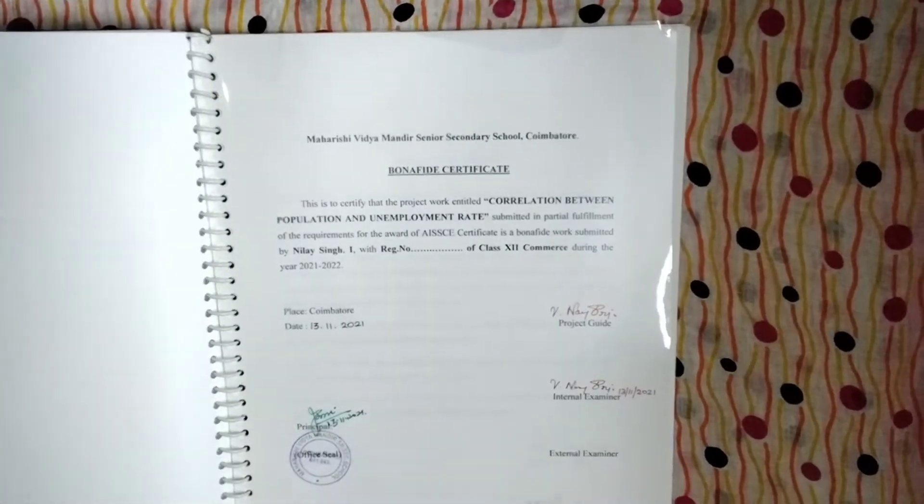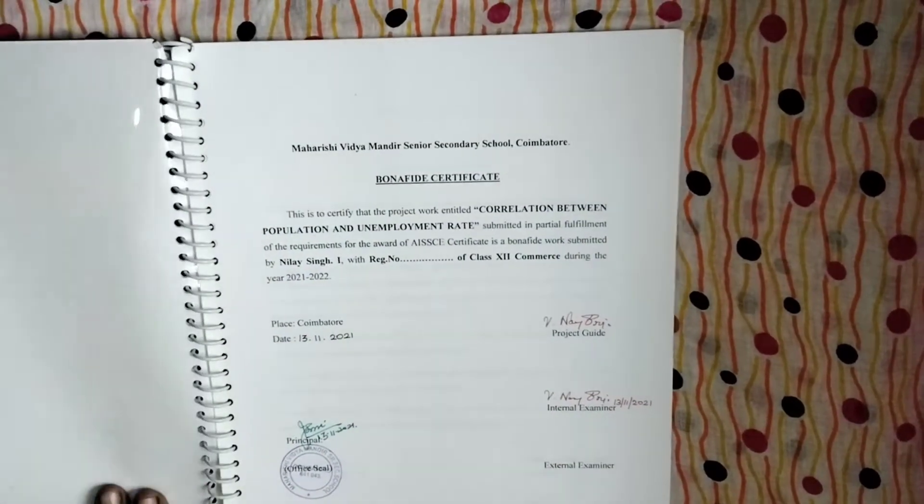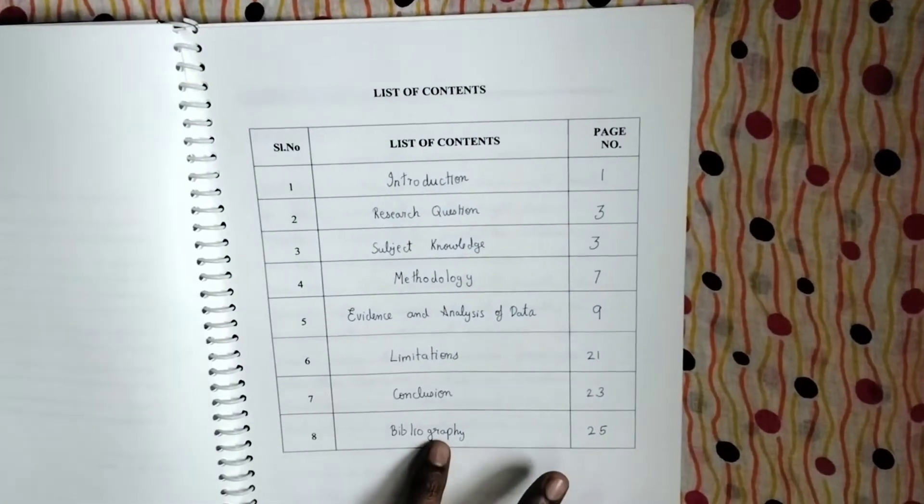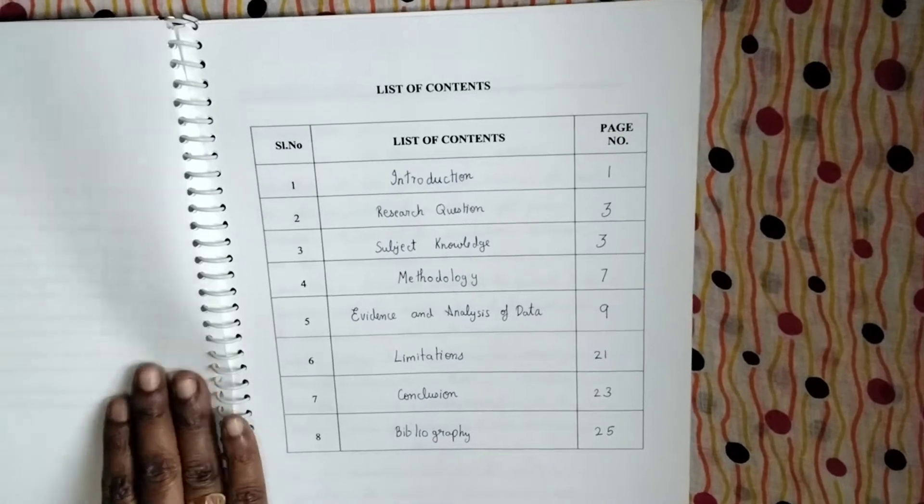Then this is the bona fide certificate. This is the acknowledgement. This is the list of contents. And we have made it like this.